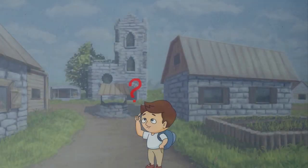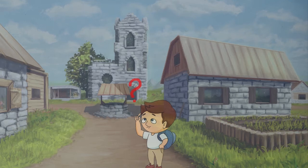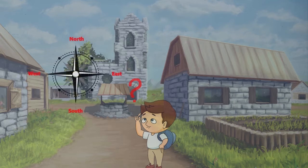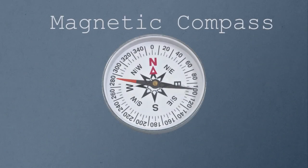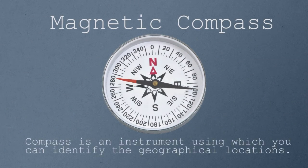Let us say you are in a new location where you do not know the geographical locations. Then how do you identify the north, south, east, west directions? A compass is an instrument using which you can identify the geographical locations. Let us understand what is there in the compass and how it identifies the geographical locations.